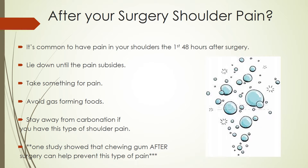It is common to have pain in your shoulders for the first 48 hours after surgery. If you have this type of pain, lie down until the pain subsides and take something for pain. Avoid gas-forming foods and stay away from carbonation if you have this type of shoulder pain. One study has shown that chewing gum after surgery can help prevent this type of pain.